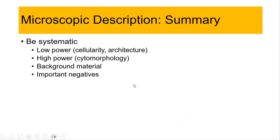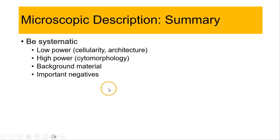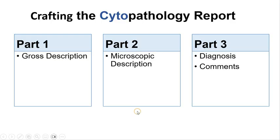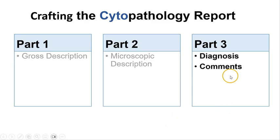In summary, it is good to have a system of reporting to ensure our reports are complete — covering low-power findings (cellularity and architecture), high-power findings (cytomorphology), background material and important negatives. I also tend to describe the cell blocks separately. We have covered microscopic description in this section, and in part 3 we will look at diagnosis and comments.